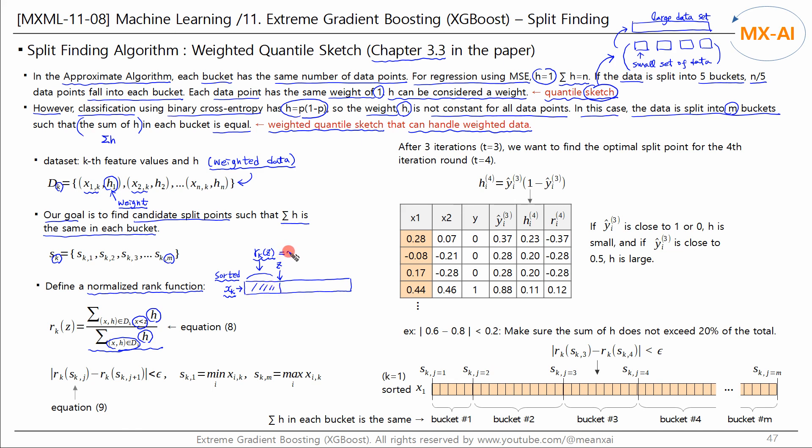It represents the proportion of the sum of h. If the rank is 0.5, it represents the median value. We call this the 50% quantile or the 50th percentile. Now let's mark the split point candidates as follows. The candidates sk range from 1 to m. The total number of data points is n. The difference between the rank of sk_j and the rank of sk_(j+1) is this part. Buckets are created where the absolute value of the difference is less than epsilon.